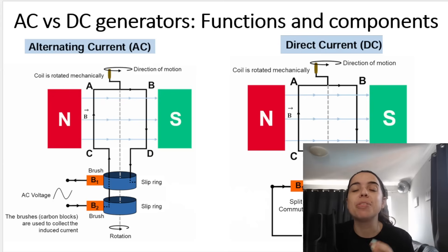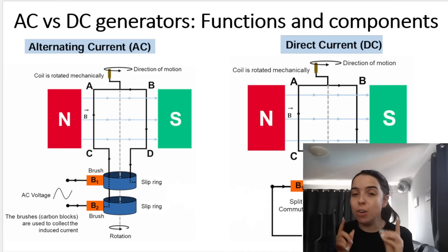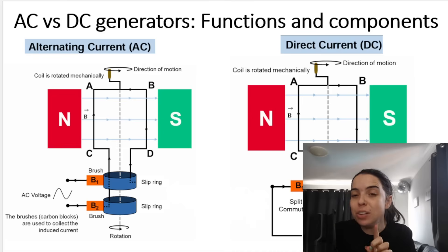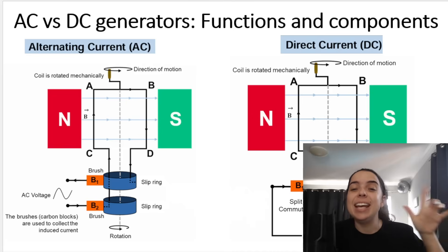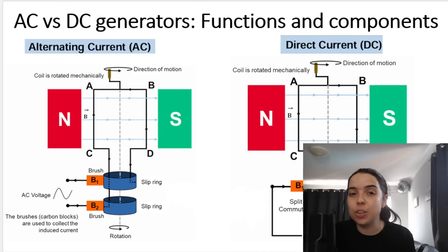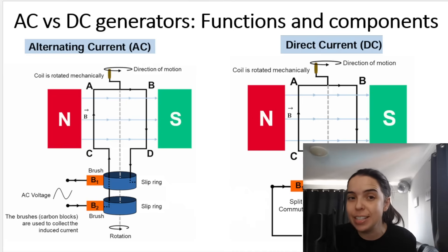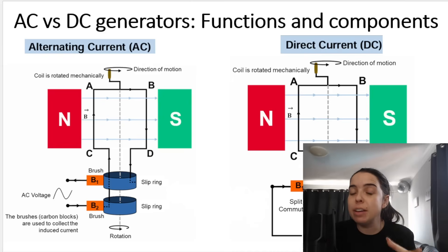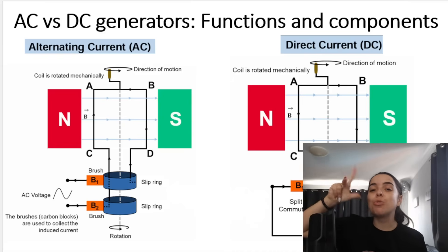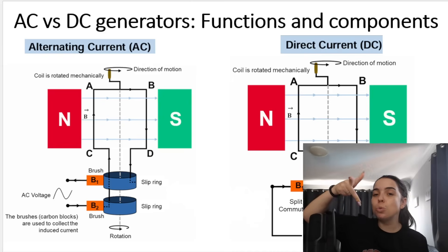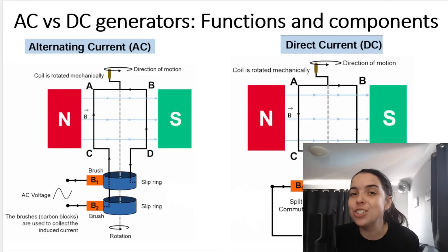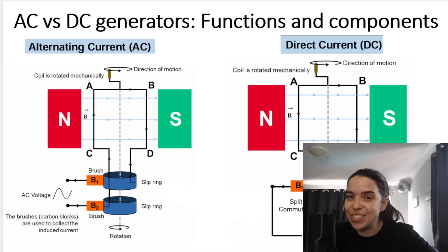We also learned about the different components of generators and their functions, so if you missed all of that, go watch the previous video. In this video, we're going to go over AC versus DC generators and their different functions and components. And in videos to come, we're going to go over how to use the right-hand rule to determine the direction of our induced current.